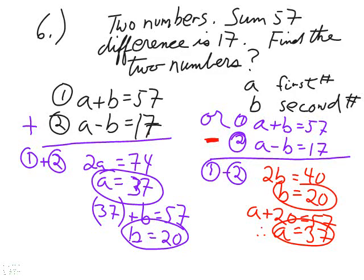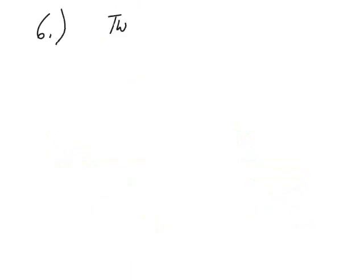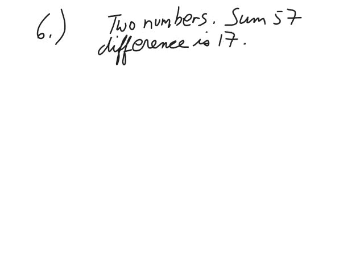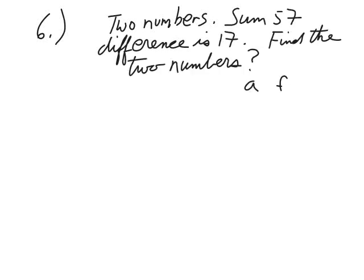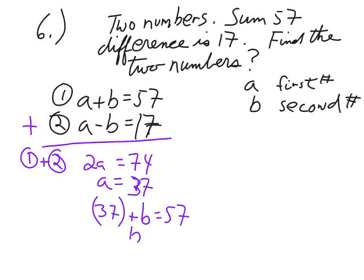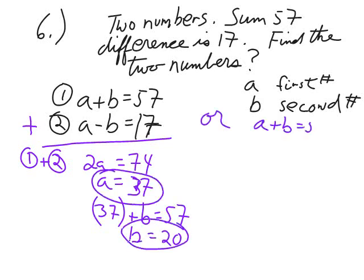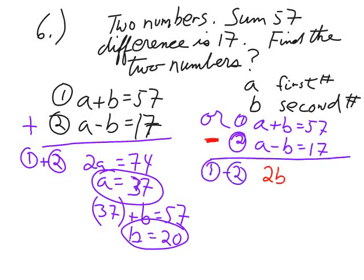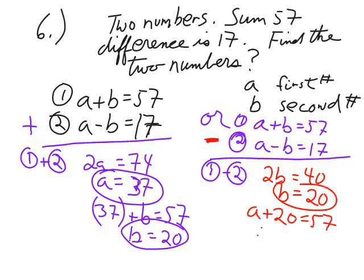More number problems. Two numbers: their sum is 57, their difference is 17. Find the numbers. Give them names — A and B. Hard to calculate things if they don't have names. Solving gives A is 37 and B is 20. Check your answer — it works.